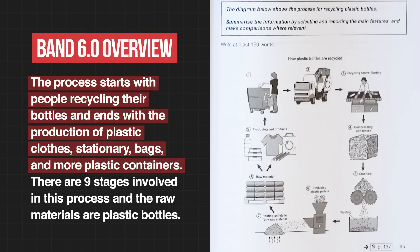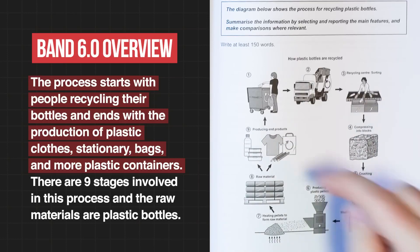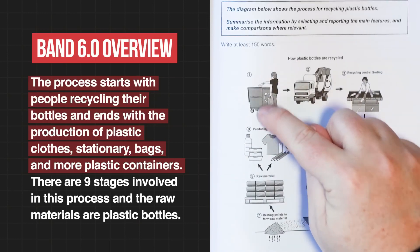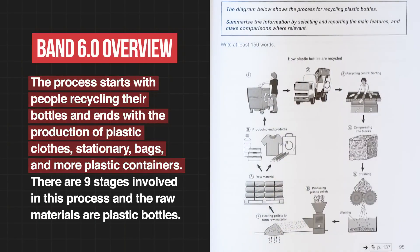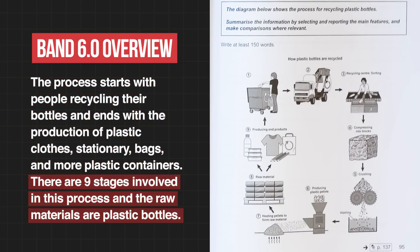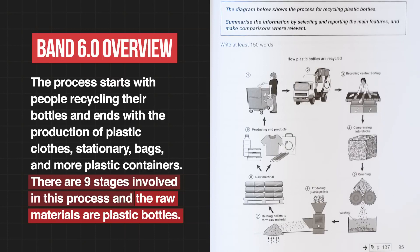Let's look at the first sentence: 'The process starts with people recycling their bottles and ends with the production of plastic clothes, etc.' Does it end? No, it doesn't. It is a cycle — it never ends, the cycle begins again. So it is inaccurate and not clear. 'Clear' means you can look at that and understand what they mean. Now the second sentence: 'The raw materials are plastic bottles.' Plastic bottles is already in the question — you paraphrased it and put it into your introduction, and now you're mentioning it again. Does this help the reader clearly understand what is going on? Not really.